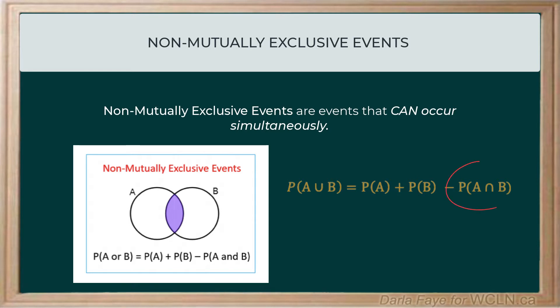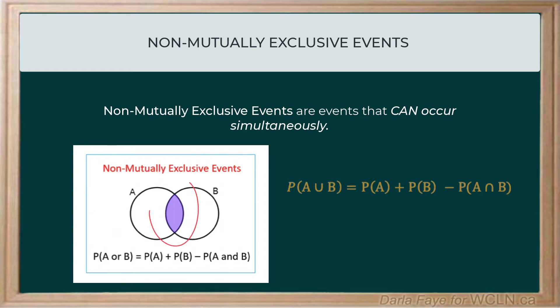The last part of this equation is the part that's new. This part represents the probability of event A and event B — that's the intersection, the outcomes they have in common. This ensures that I'm not including the favorable outcomes they have in common more than once.